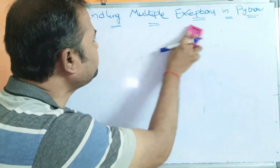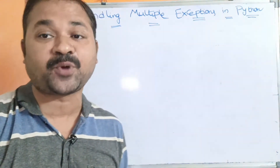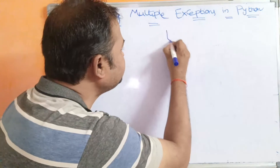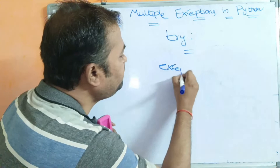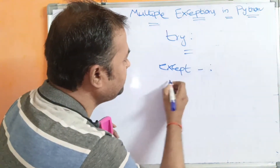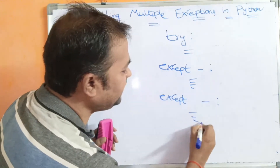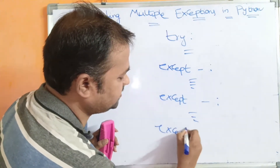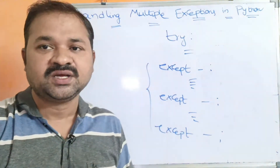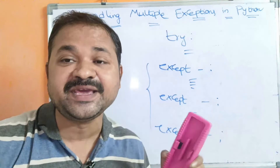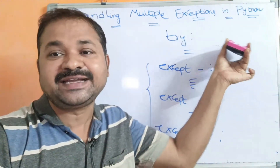In this concept, we are focusing on how to handle multiple exceptions in Python. A try block can have multiple except blocks — we can write n number of except blocks. Which except block gets executed depends upon the type of exception that is thrown.